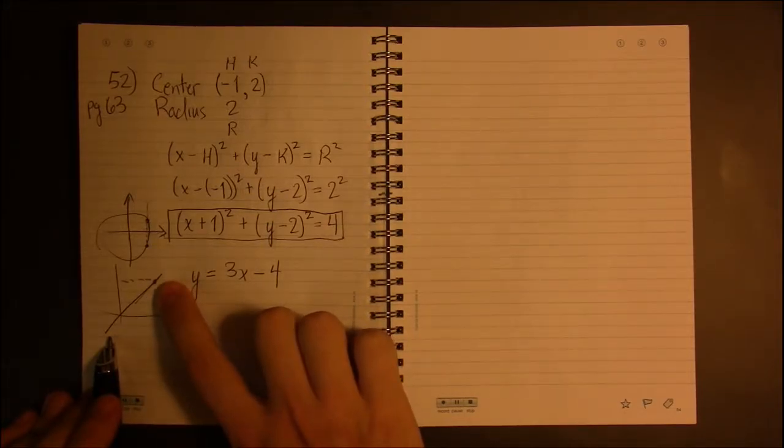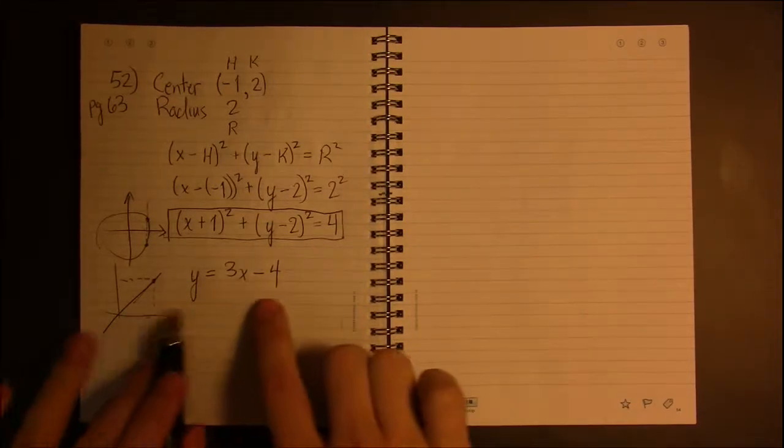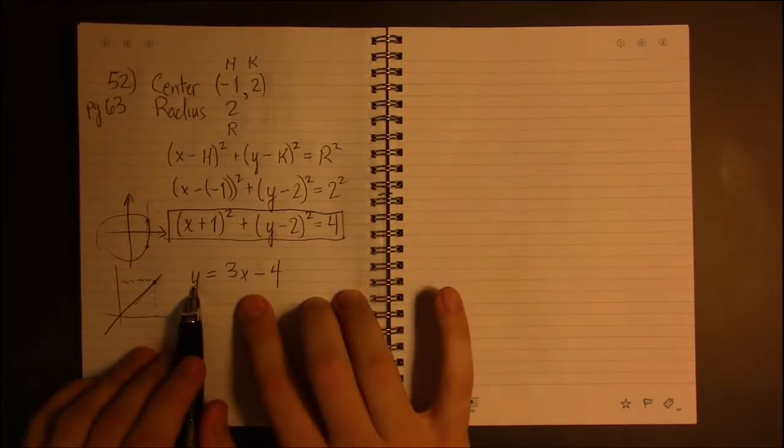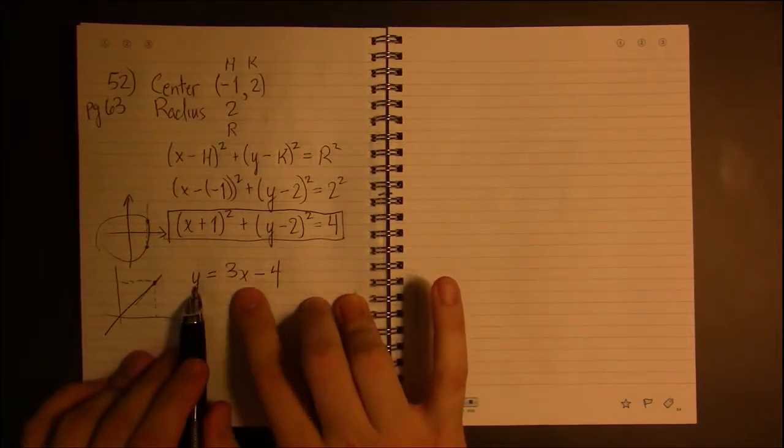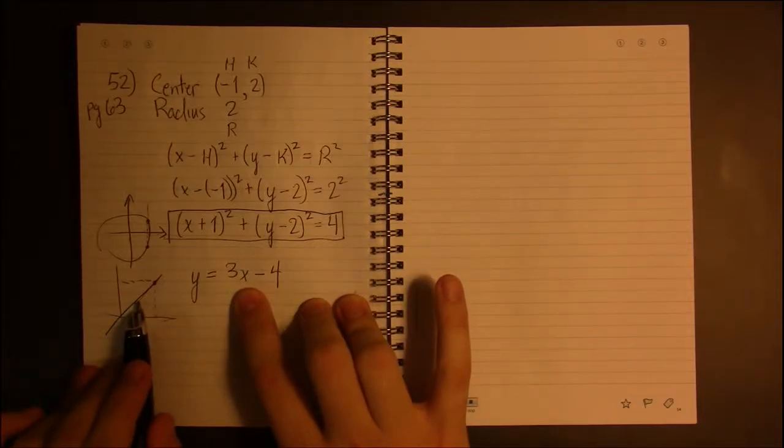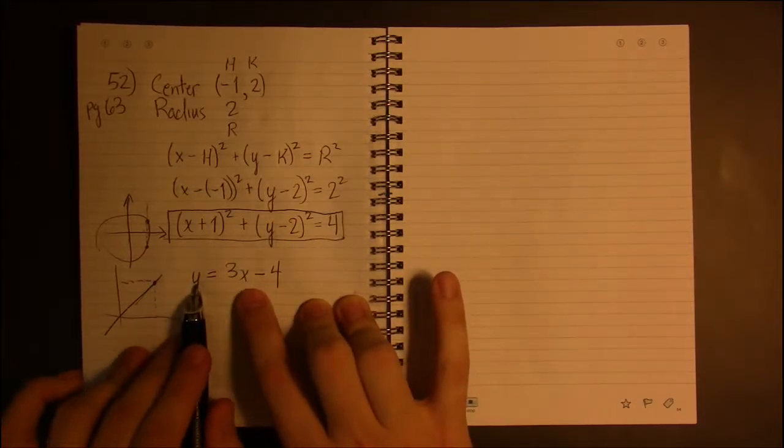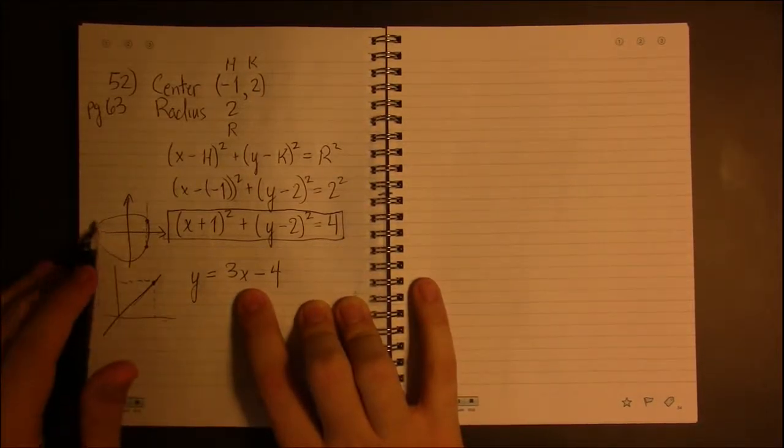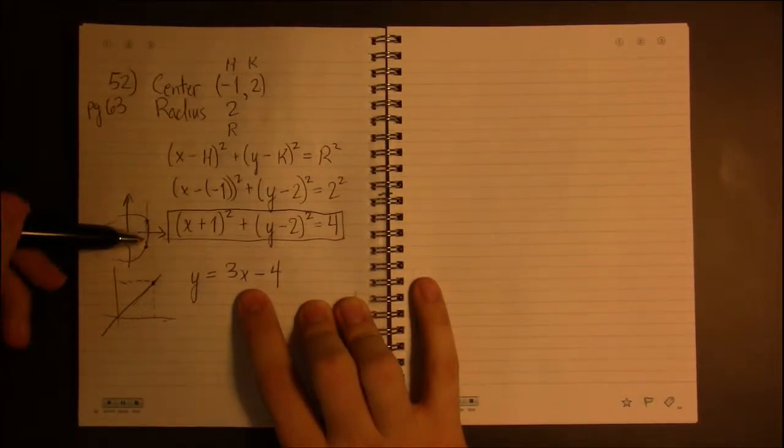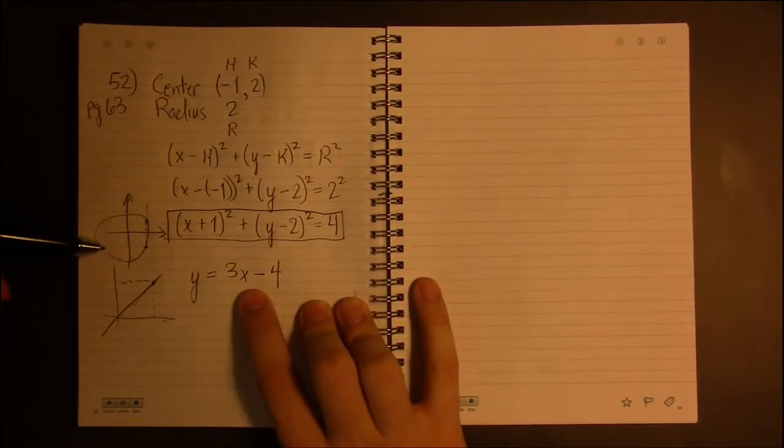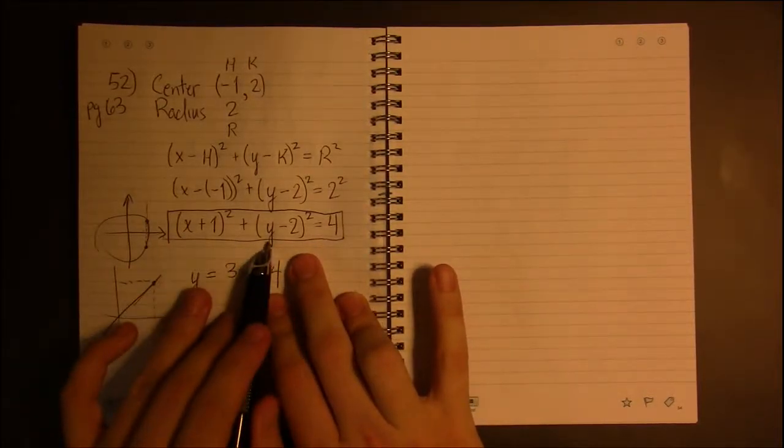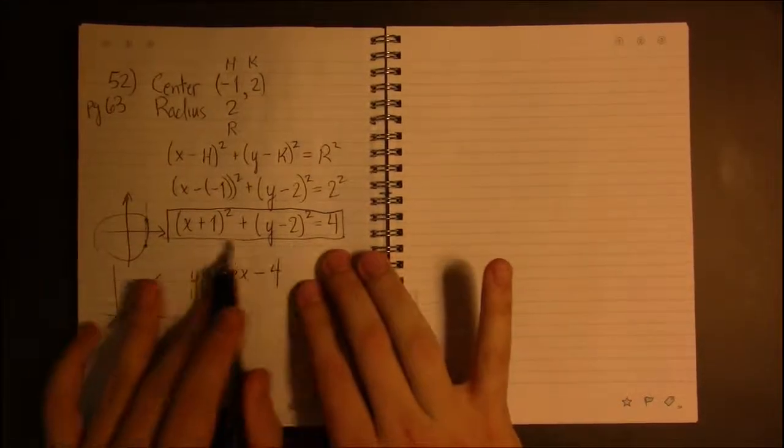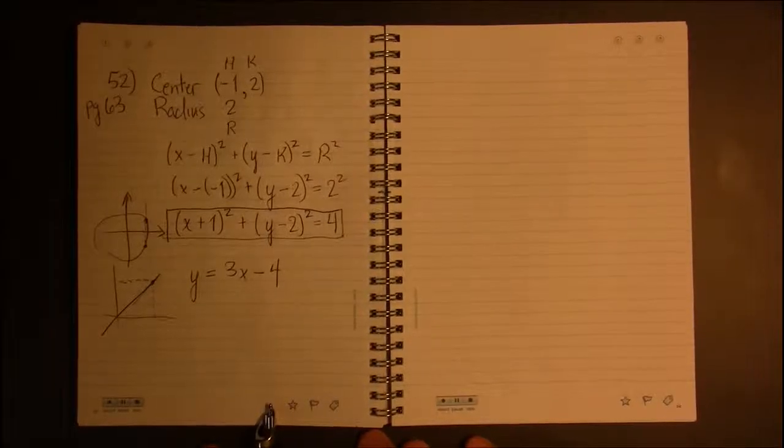And we want to represent every one of these points on the line, so we leave X and Y as variables. And that way, every point on this line, every point that's on this line, will satisfy this equation. It's the same thing here. Every point on the circle will satisfy the equation if you plug in X and Y. It's just that there's not one of them, there's infinitely many points that you can choose from, and we want to describe all of them with one simple equation.